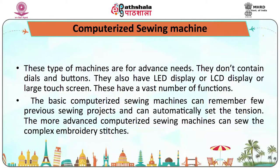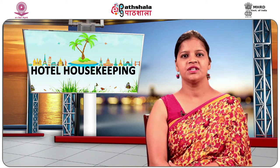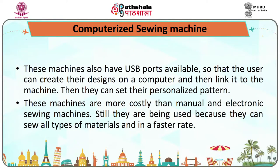Computerized sewing machines are for advanced needs. They do not contain dials and buttons but have LED, LCD display or a large touch screen with a vast number of functions. Basic computerized machines can remember a few previous sewing projects and automatically set the tension. More advanced ones can sew complex embroidery stitches. These machines also have USB ports so the user can create a design on a computer, link it to the machine, and set personalized patterns. They are costlier but can sew all types of material at a faster rate.